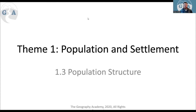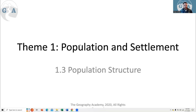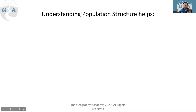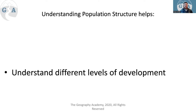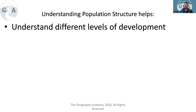This is 1.3 Population Structure in Theme 1 of Population and Settlement. This links up with previous units - if you go back to unit 1.1 you'll see it matches up well and also helps explain things in Theme 3, which deals with development. So understanding this is crucial.